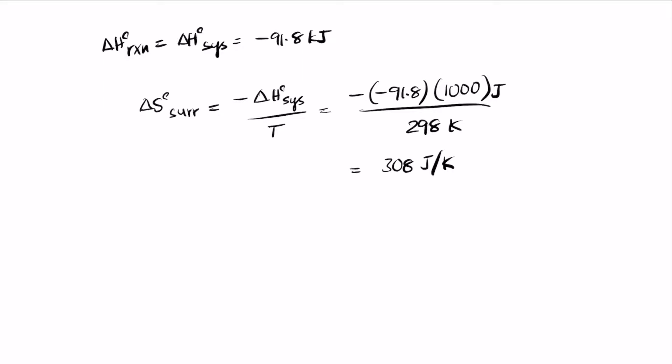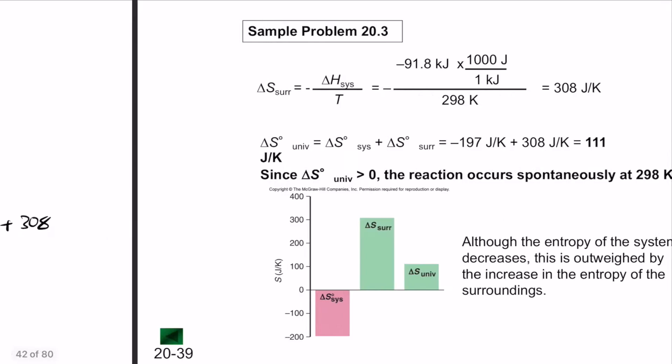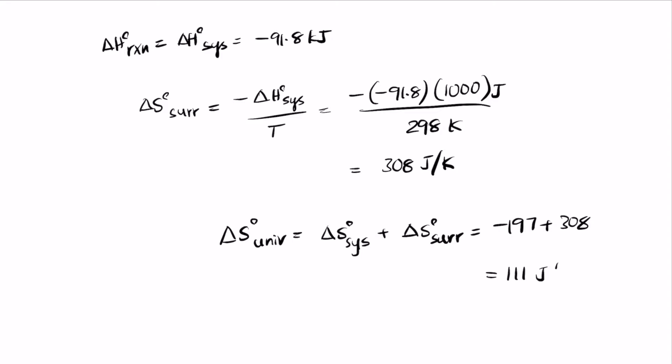Delta S of the universe equals delta S of the system plus delta S of the surroundings. So delta S of the universe is minus 197 plus 308, which gives a value of 111 Joules per Kelvin. This is delta S of the universe, which is greater than 0.